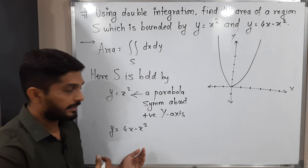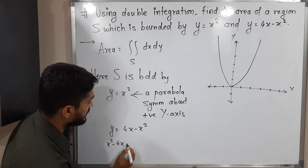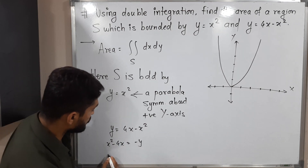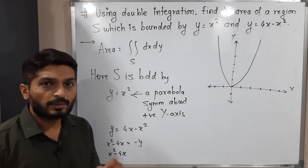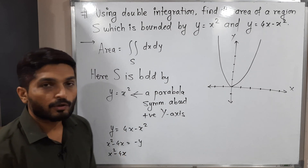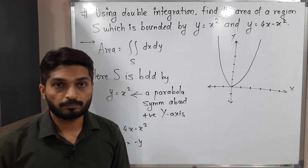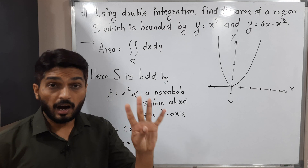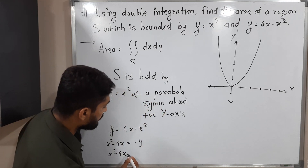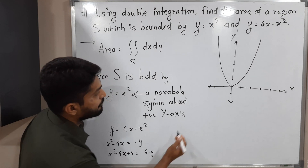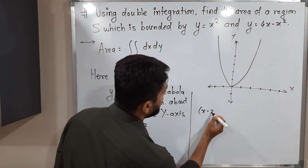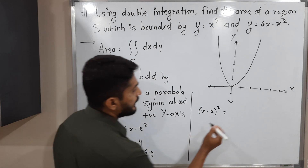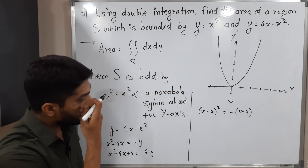Let us shift y to the other side: x squared minus 4x equals minus y. Now I will complete the square. The coefficient of x is 4; we take its half which is 2, and square it to get 4. Adding 4 to both sides gives x minus 2 squared equals minus y plus 4, which we write as x minus 2 squared equals minus (y minus 4).